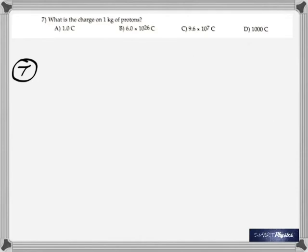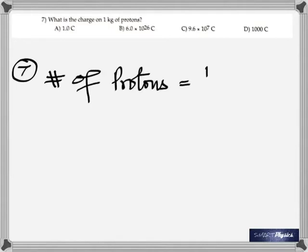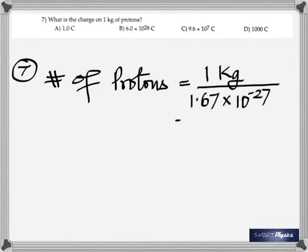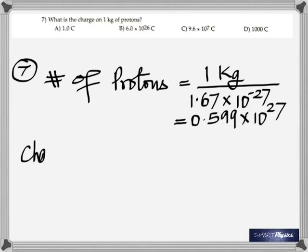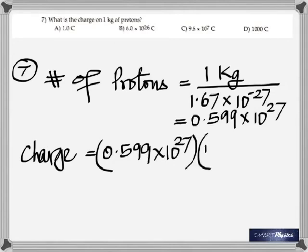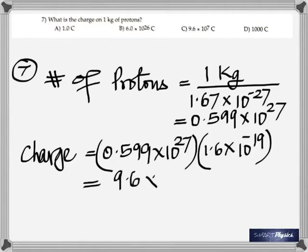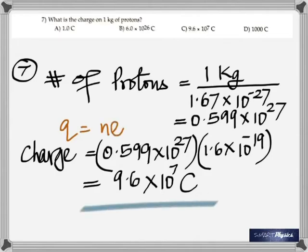Question seven: what is the charge on one kilogram of protons? You need to find how many protons are in 1 kg, so divide 1 kg by the mass of one proton to get the number of protons. Since you know the charge of one proton, multiply the number of protons by that charge. The total charge is 9.6 × 10⁷ coulombs. This again uses q = n × e.